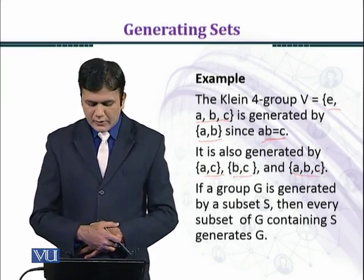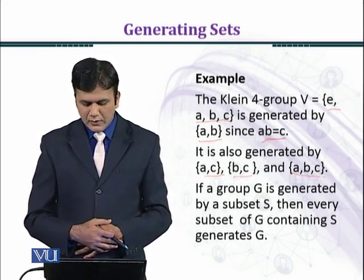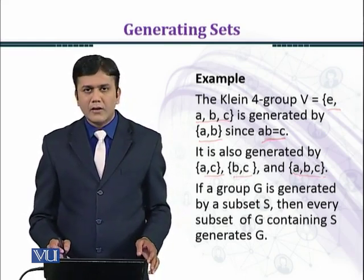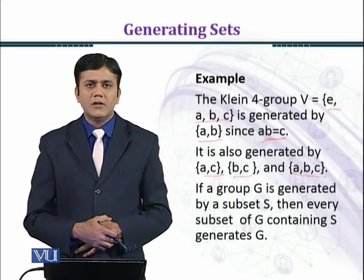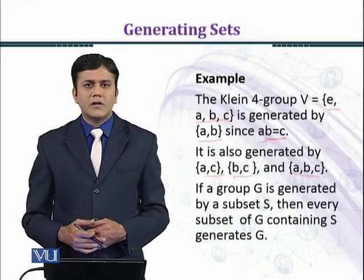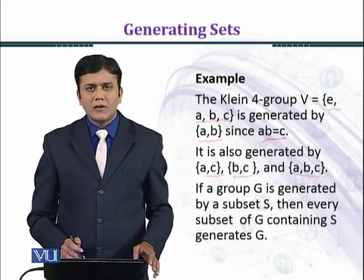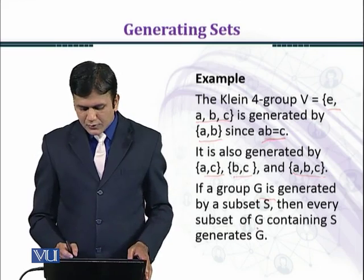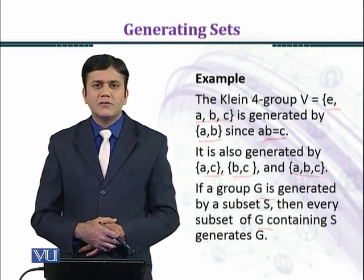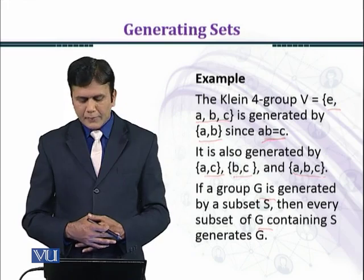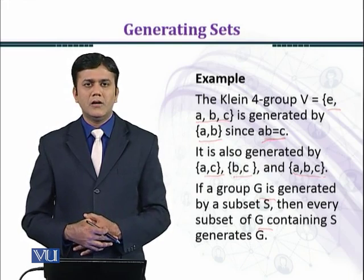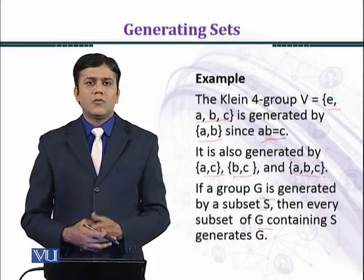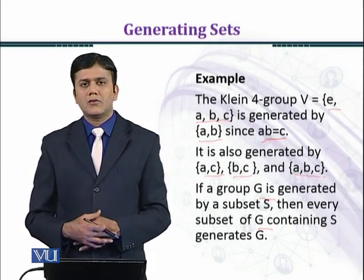Klein 4-group کو {b, c} سے بھی generate کیا جا سکتا ہے کیونکہ bc = a ہے، اسی argument سے۔ اور {a, c} سے b generate ہوگا کیونکہ ac = b ہے۔ اس طرح سے اگر آپ نے generating set میں c element بھی include کر لیا تو v definitely generate ہوگا۔ تو ہم اسے اس طرح summarize کر سکتے ہیں: if a group G is generated by a subset S, then every subset of G containing S also generates G. تو یہاں a اور b جو generating set ہے، کوئی بھی set جس میں {a, b} contain ہو — جیسے {a, b, c} — وہ بھی V کو generate کرے گا۔